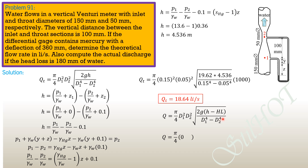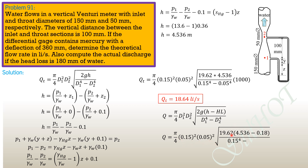Substituting: Q_actual = (π/4)(0.15² × 0.05²) × √(19.62 × (4.536 − 0.18)) / √(0.15⁴ − 0.05⁴) × 1000, giving an actual discharge of 18.27 L/s.